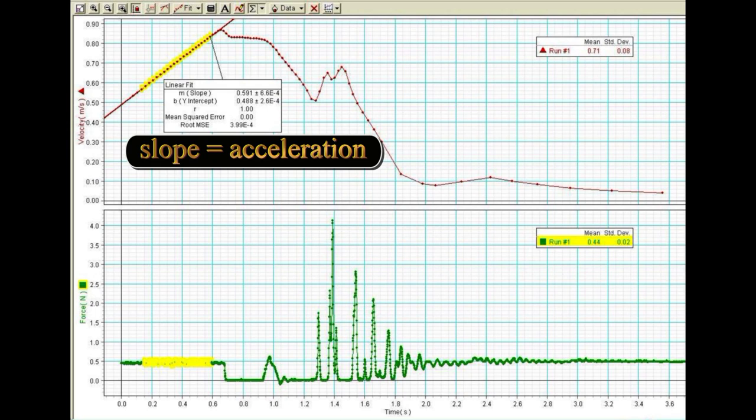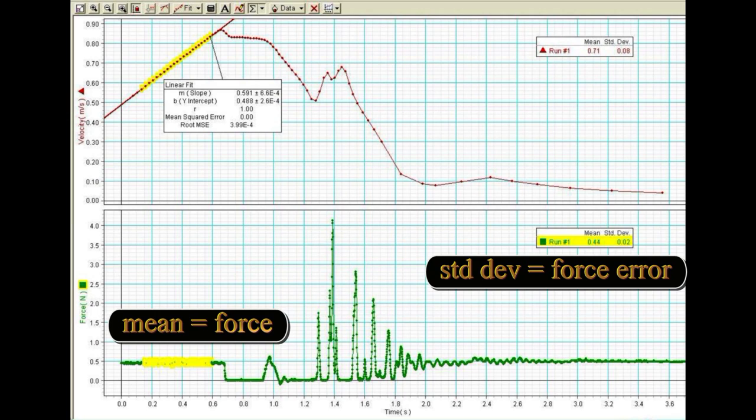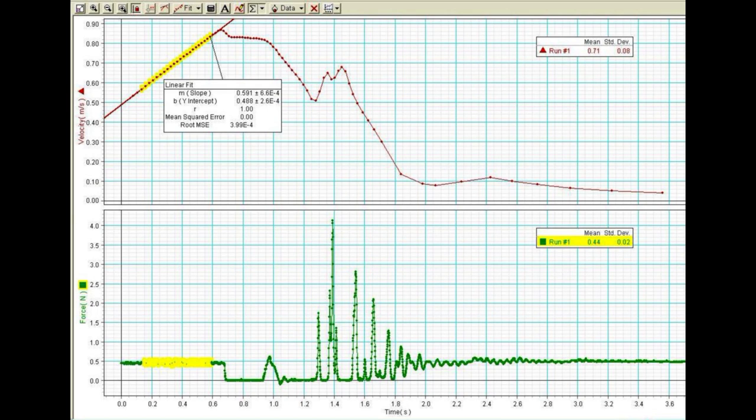The bottom graph is force versus time. Highlight the region of constant force as the weight accelerates the cart and record the mean value of force and the standard deviation as the error in force. This error should be substantial. Hang a variety of accelerating weights and repeat the measurement of acceleration and force along with their errors.